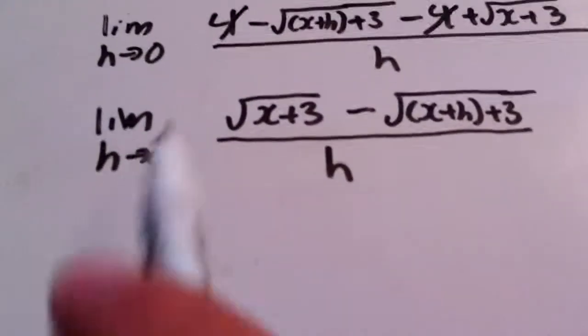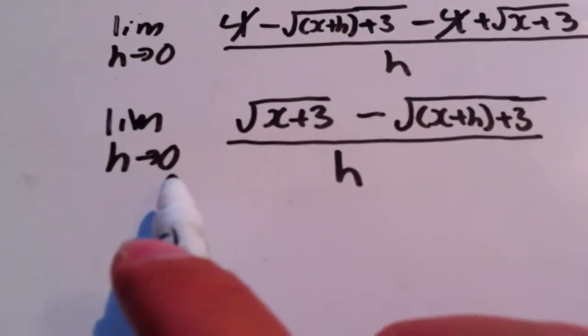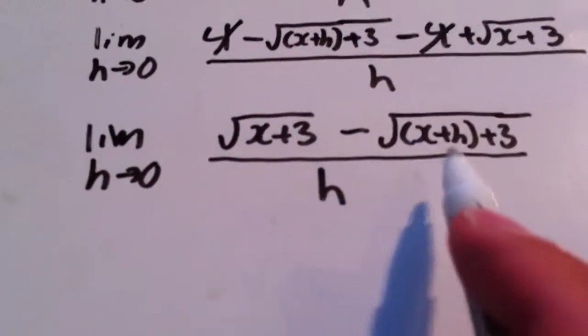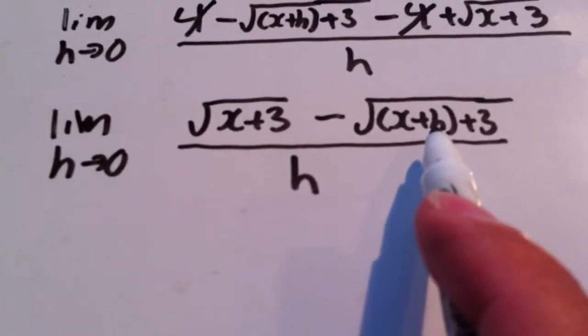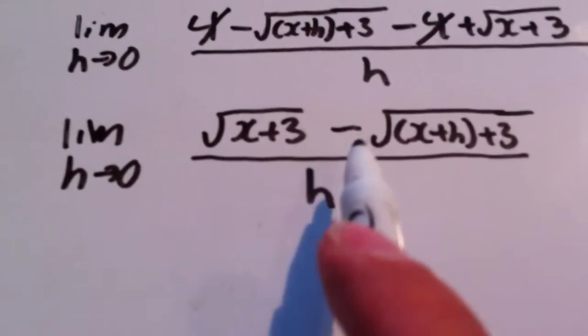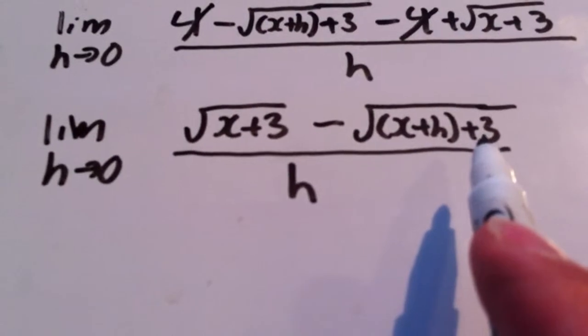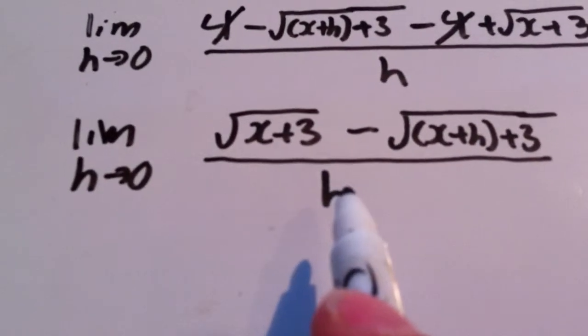Now at this point, if we substitute in h=0, we'd end up with √(x+3) because this h would be 0, so it would be √(x+3) - √(x+3), which would be 0/0.